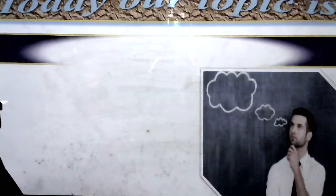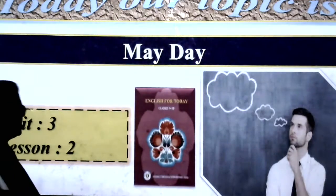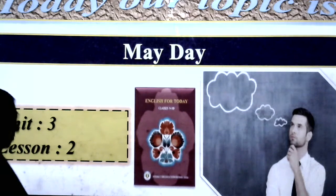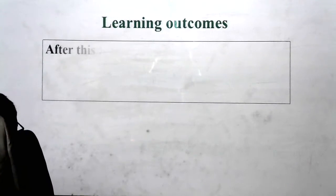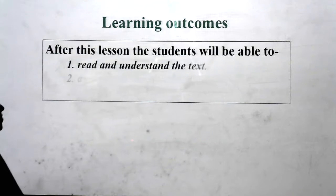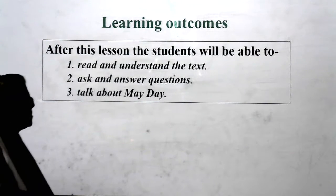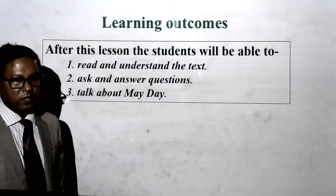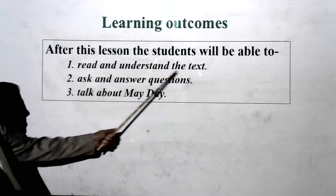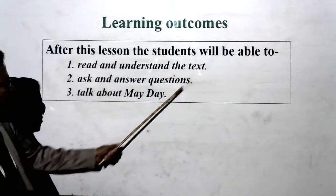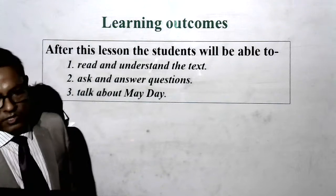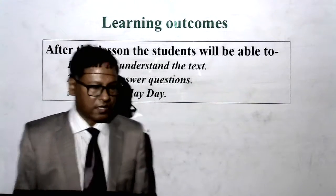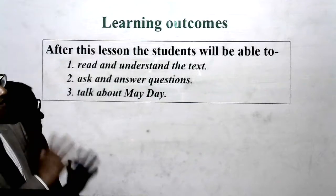Today our topic is May Day — Unit 3, Lesson 2. Learning Outcomes: after this lesson, the students will be able to read and understand the text, ask and answer questions, and talk about May Day. When the students go through this text, of course they will be able to do these kinds of activities.